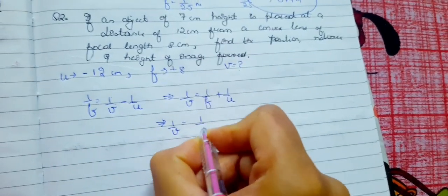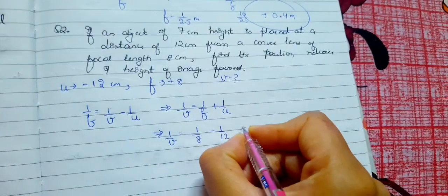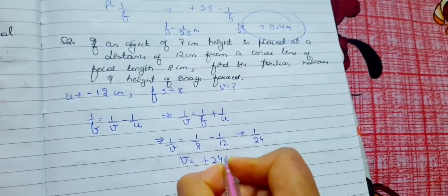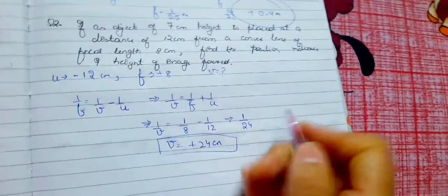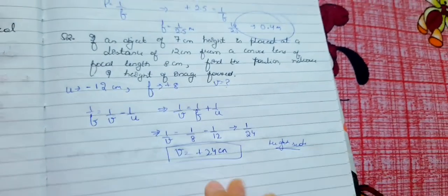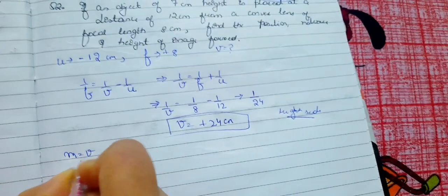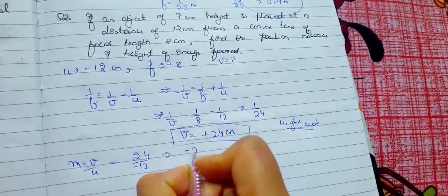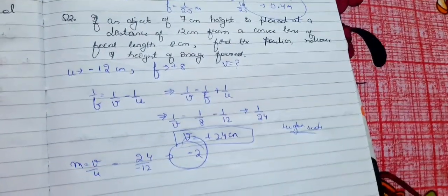Substituting f = 8 and u = -12, we get 1/v = 1/8 + 1/(-12) = 1/24, so v = 24 cm. Now magnification m = v/u = 24/(-12) = -2.